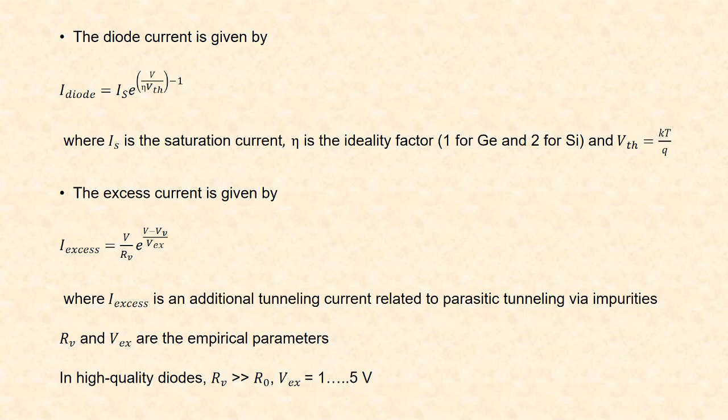The diode current is given by I_diode = Is × (e^(V / (η × Vth)) − 1), where Is is the saturation current, η is the ideality factor — it is 1 for germanium and 2 for silicon — and Vth is the thermal voltage equal to kT/q. Excess current is given by Ix = (V / Rv) × e^((V − Vv) / Vex), where Vv is the valley voltage and Rv is the valley resistance, and Ix is an additional tunneling current related to parasitic tunneling via impurities.